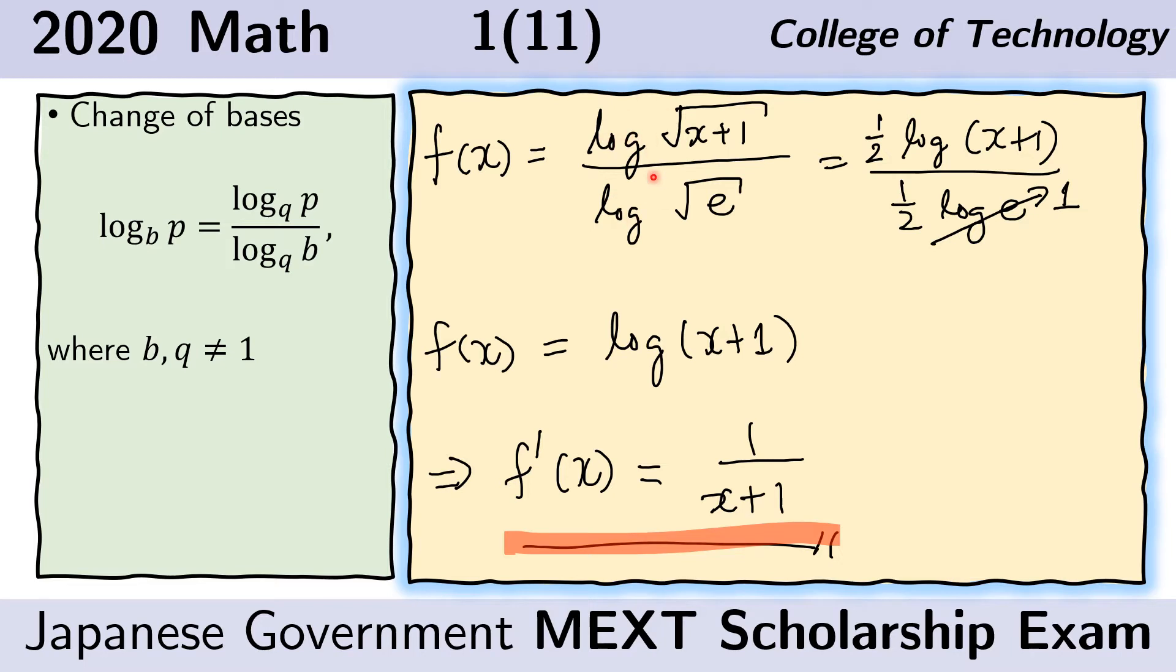Here we first convert the base. We just copied the given and moved the base of the given here into the denominator. We just have to match the base here and the base here. In this case, we use the base E. So log here is in fact just the natural logarithm.